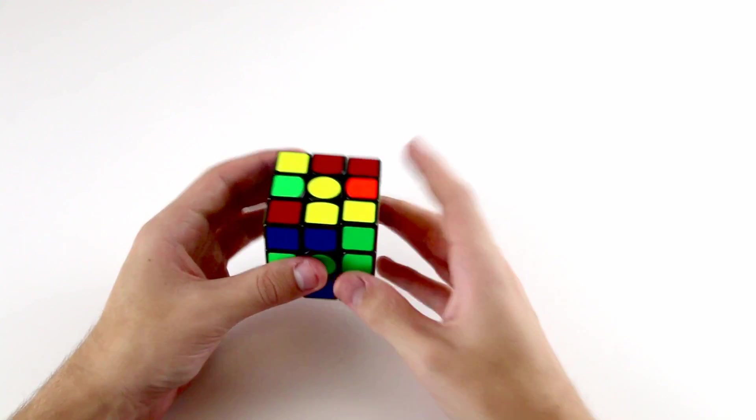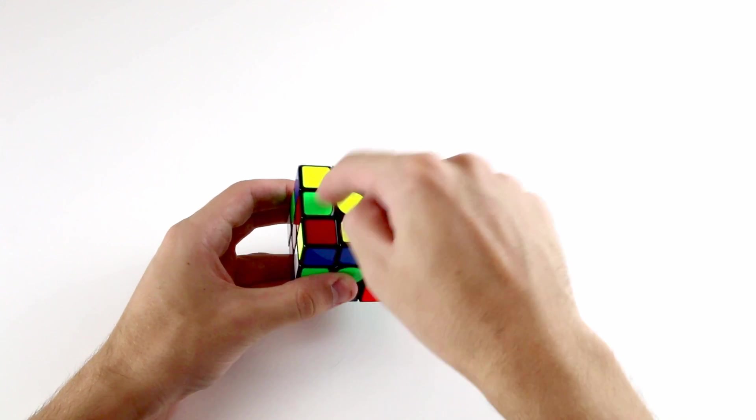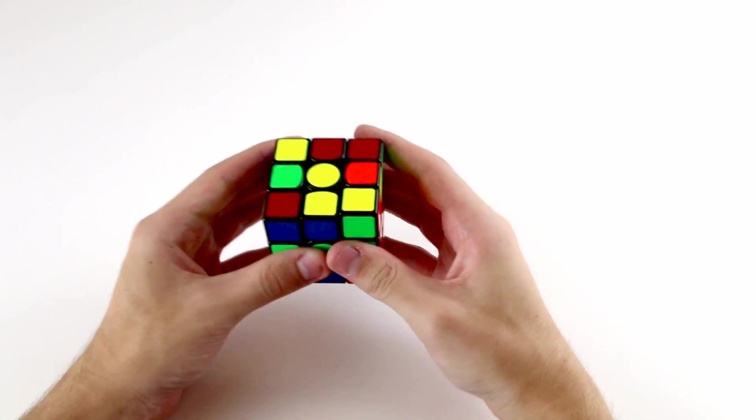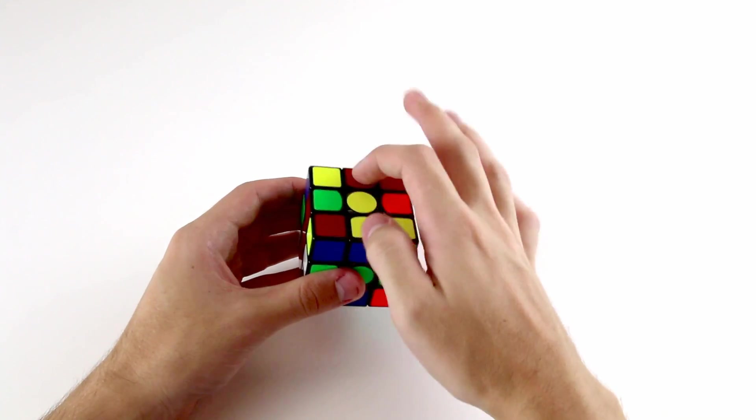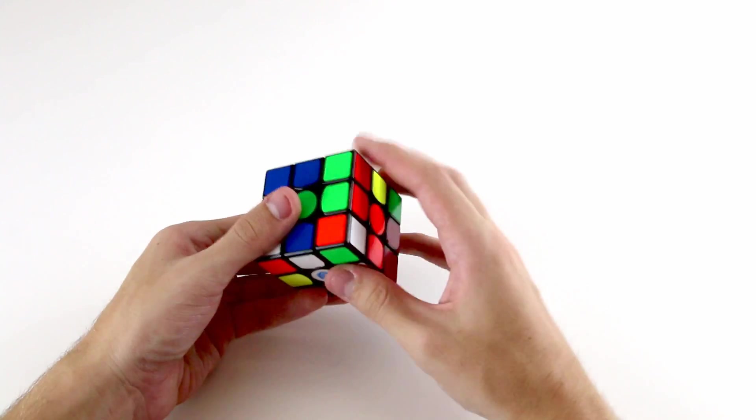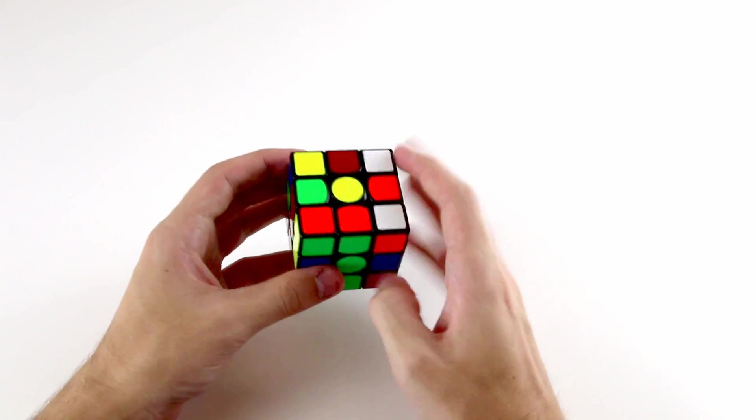So if we're only using R, F, and D moves to solve our cross, then the pieces in these three positions—this edge, this edge, and this corner—won't move around at all. So you know that they'll stay constant, and if your F2L pieces are up here then they won't move if you're only using your R, F, and D moves to solve your cross. They'll stay like that.